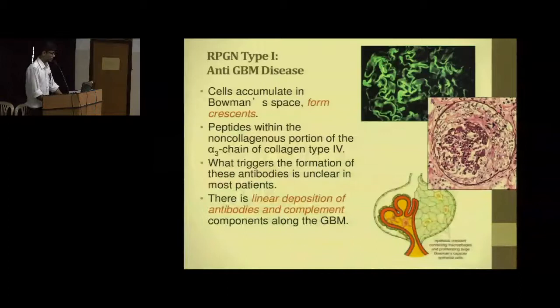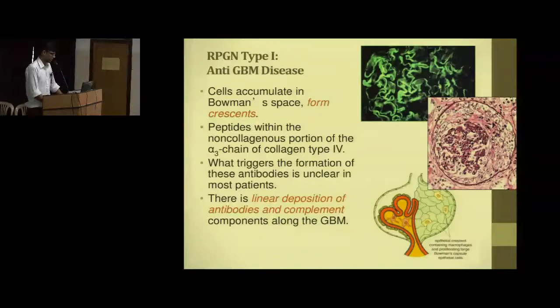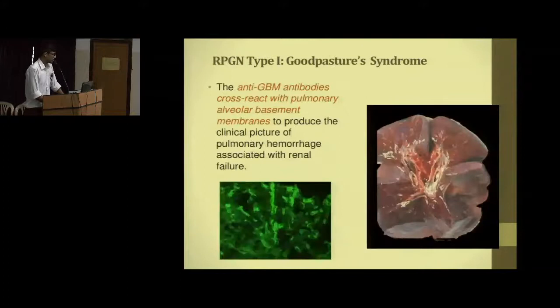Coming to RPGN Type 1 — this is what our patient had. Our patient did not have any involvement of the lung, so he had anti-GBM disease. There was linear deposition on immunofluorescence and crescents were seen on light microscopy. When lung is involved as in Goodpasture syndrome, there is typically sparing of the costophrenic angle and upper lobes, with the disease being perihilar and bibasilar.